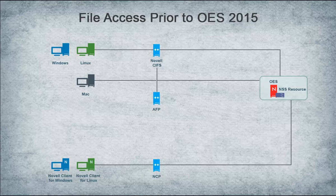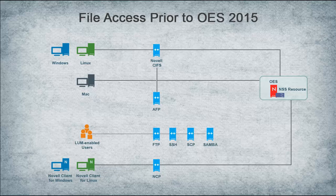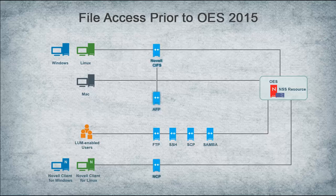LUM enabled users can access NSS resources using FTP, SSH, SCP, and Samba, in addition to accessing them using CIFS, AFP, and NCP.